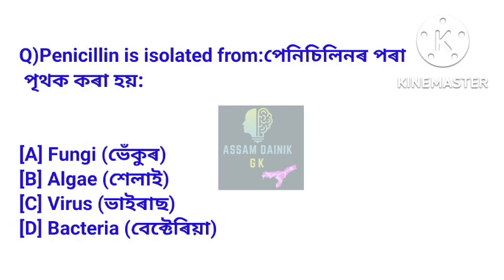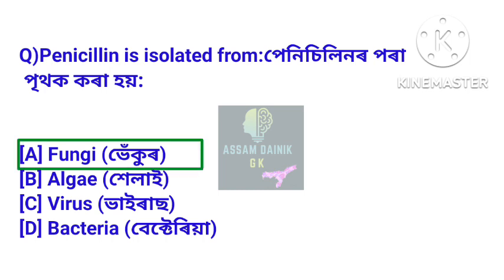Penicillin is isolated from — penicillin prithak kora hoi. Answer: fungi. Penicillin or pra bhekurak prithak kora hoi.